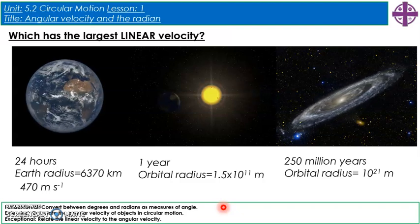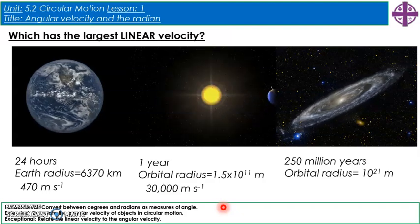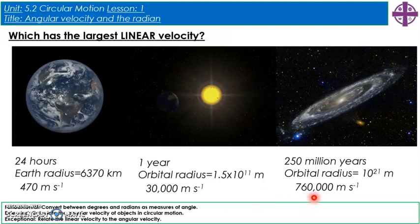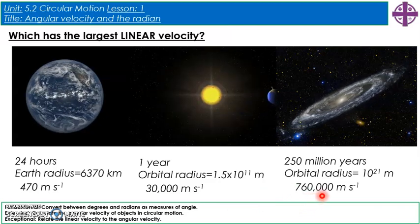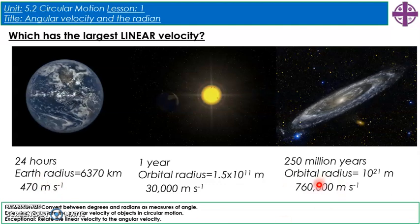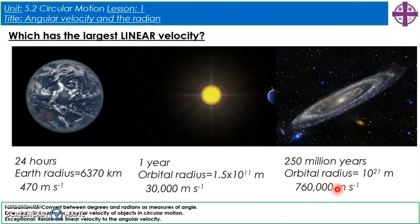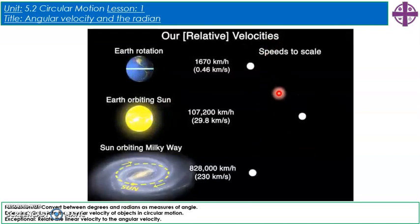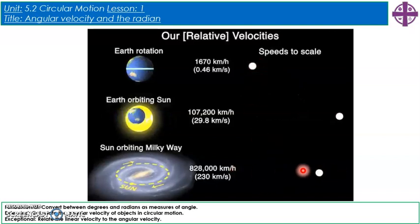The earth's rotation gives 470 metres per second. The earth's orbit around the sun gives 30,000 metres per second. And the solar system's orbit around the galaxy means we move at 760,000 metres per second — incredibly quickly. We can compare these speeds to scale, and it's quite astonishing how much faster the sun's orbit around the Milky Way is compared to the earth's rotation.